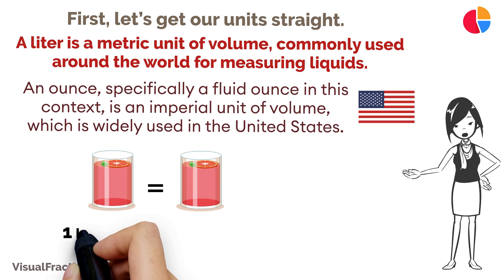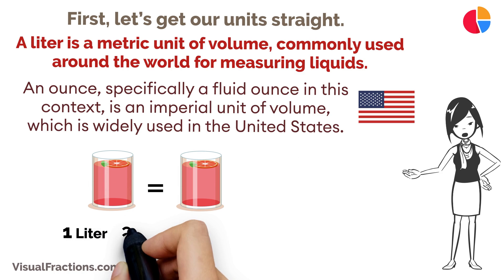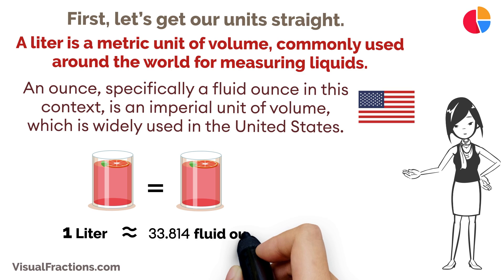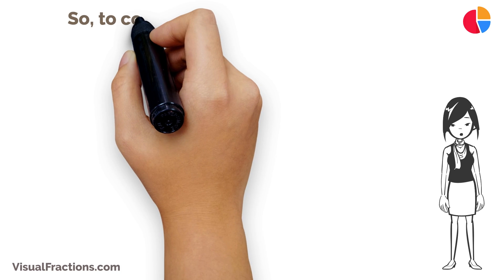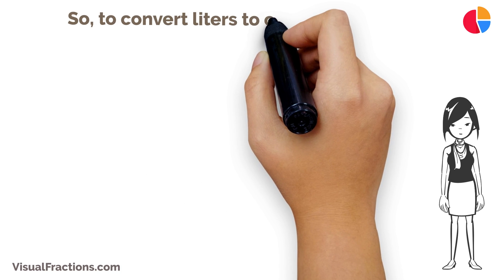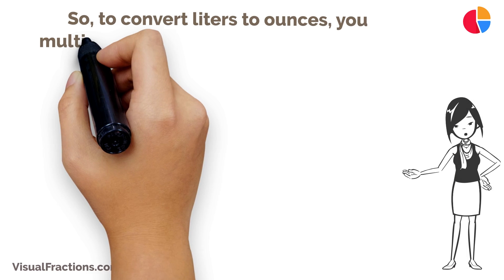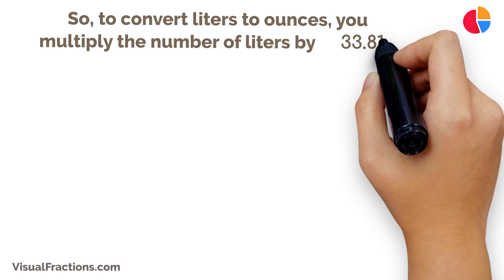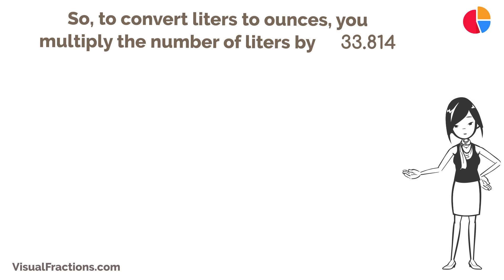Now, one liter is approximately equivalent to 33.814 fluid ounces. So, to convert liters to ounces, you multiply the number of liters by 33.814.